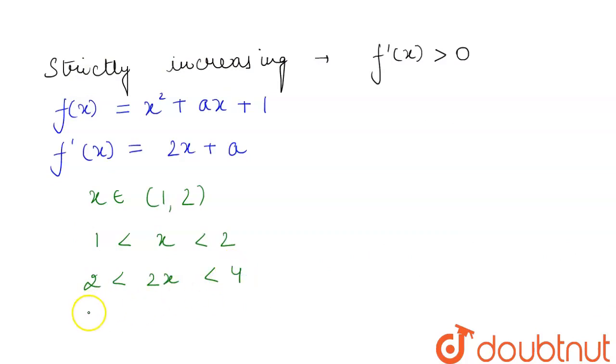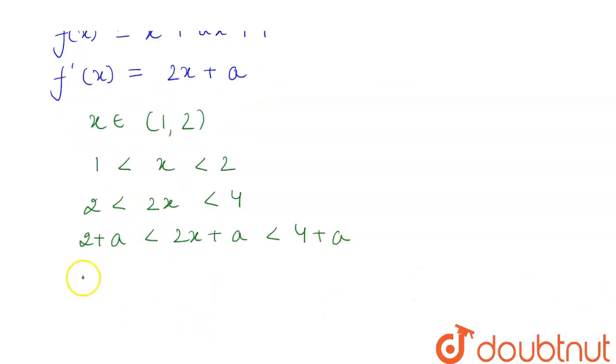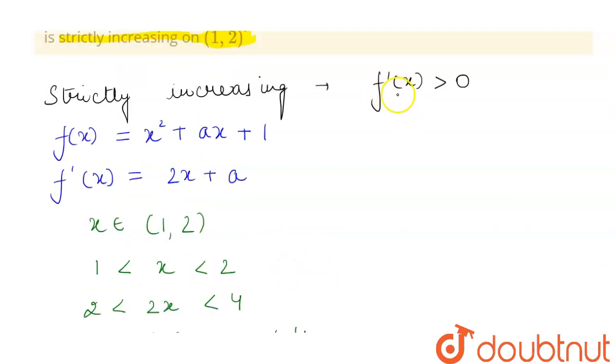And if we add a, this will become 2 + a < 2x + a < 4 + a. We see that the middle term forms f'(x), so our f'(x) lies between 2 + a and 4 + a.